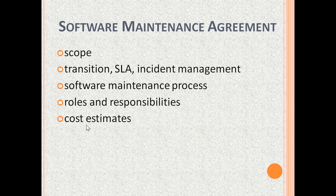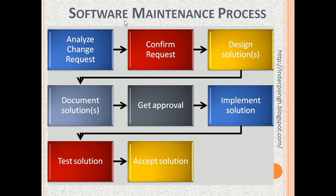The software maintenance process is done by the software maintainers. It generally involves tasks like: analyze change requests; confirm or deny the request based on the analysis; design one or more solution options; document the possible solutions. Then the users approve one of the solutions. The maintenance developer implements the solution. Then the maintenance tester tests the solution. Finally, the solution is accepted by the users.